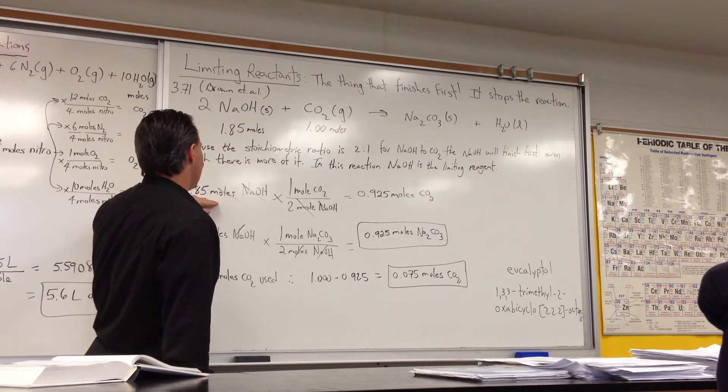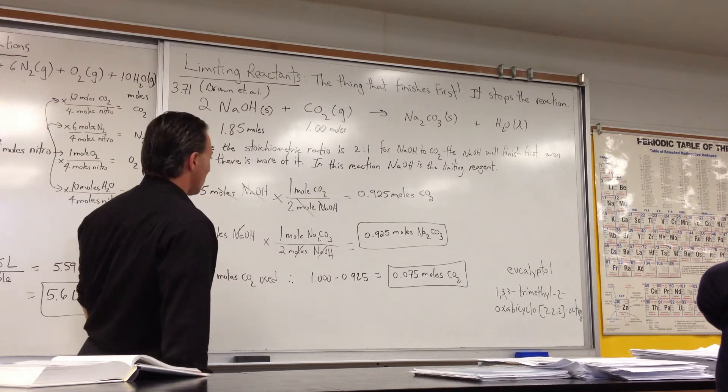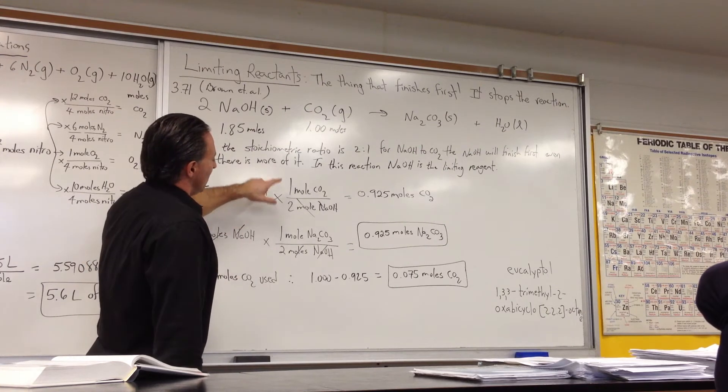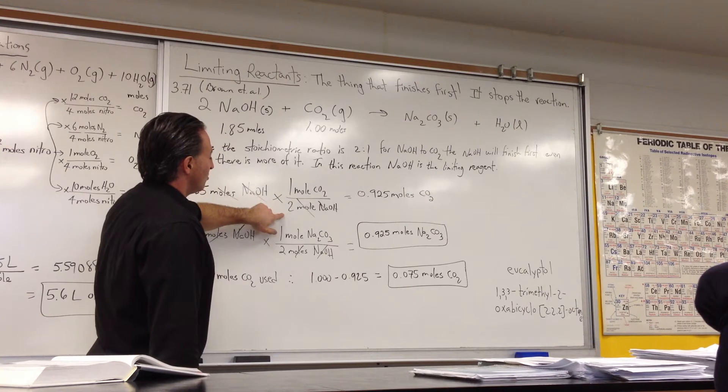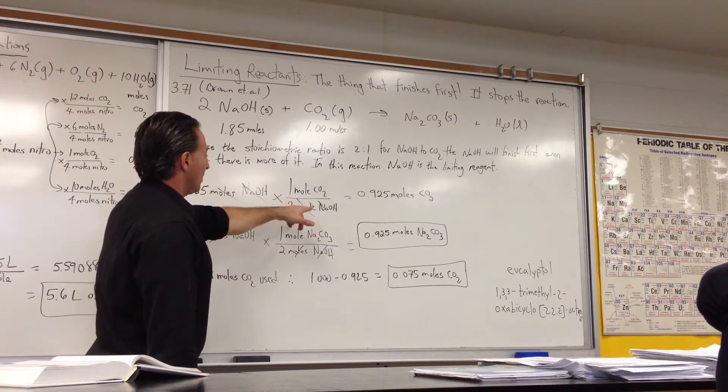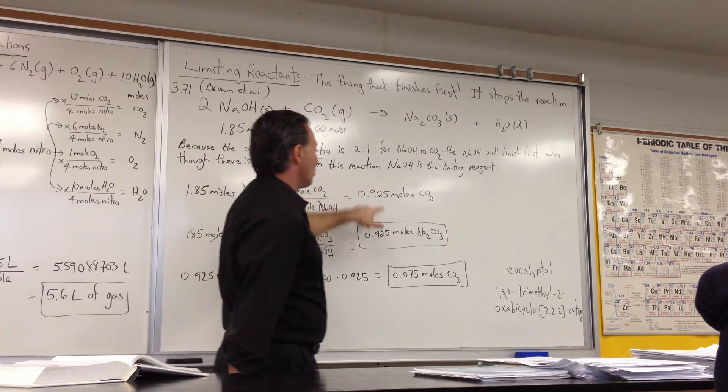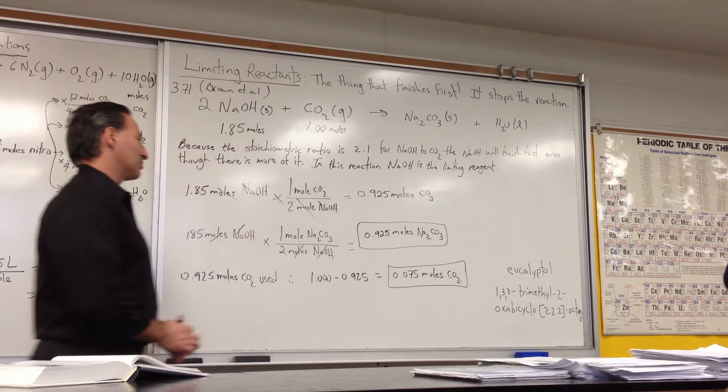So I start the reaction with the calculation by saying 1.85 moles of sodium hydroxide times the stoichiometry of the reaction. One mole of CO2 produced for every two moles of NaOH used, moles of NaOH cancel, and we get 0.95 moles of carbon dioxide is produced.